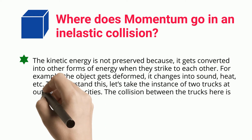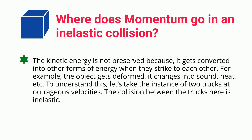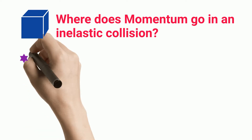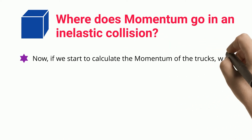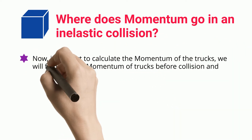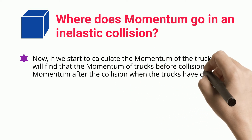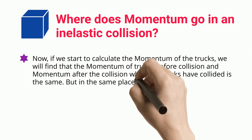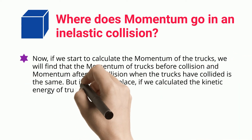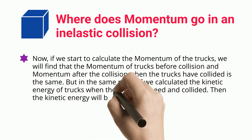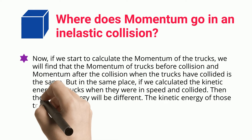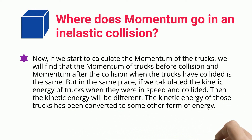To understand this, consider the instance of two trucks traveling at high velocities. The collision between the trucks is inelastic. If we calculate the momentum of the trucks, we will find that the momentum before the collision and after the collision is the same. However, if we calculate the kinetic energy of the trucks before and after they collide, the kinetic energy will be different — it has been converted to some other form of energy.